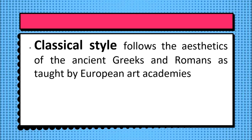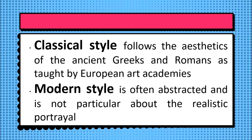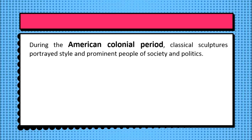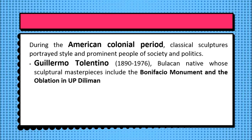Contemporary sculpture in the Philippines can be classified into two styles: the classical and the modern. The classical style follows the aesthetics of the ancient Greeks and Romans as taught by European Art Academies, while the modern style is often abstract and less particular about realistic portrayal. During the American colonial period, classical sculptures portrayed prominent people of society and politics. This was led by the Bulacan native Guillermo Tolentino (1890–1976), whose masterpieces include the Bonifacio Monument and the Oblation at UP Diliman.